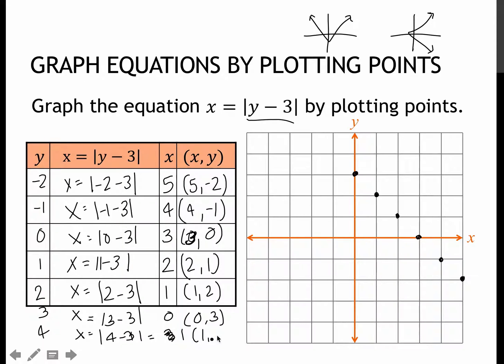So 1 comma 4 would be 1 comma 4. So that's where we finally find that it turns around and goes the opposite direction. So that is what an absolute value with an x equals would look like.